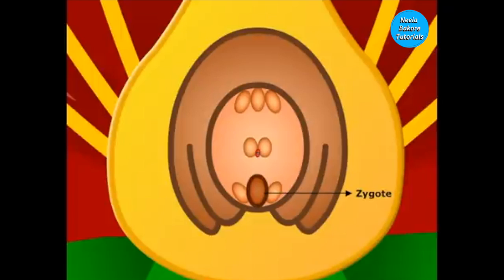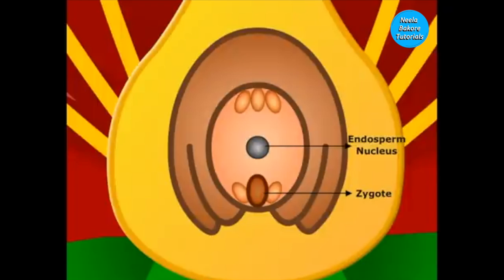The second male gamete fuses with the two polar nuclei to form a triploid endosperm nucleus, which will develop into the endosperm cell. The fusion of these three nuclei is known as triple fusion. The endosperm will divide later on to form nutritive tissue, which will provide nourishment to the developing embryo. The process of fertilization and triple fusion together is called double fertilization.